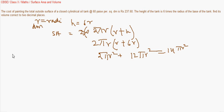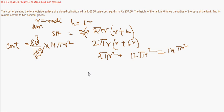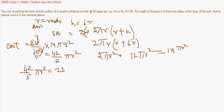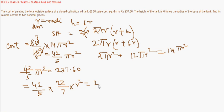The cost of painting is 60 paise, which is 60 by 100 rupees, times 14 pi r squared. Simplifying the numerical parts gives 42 by 5 pi r squared as the cost of painting. Since the total cost is also given as 237.60, we equate 42 by 5 pi r squared with 237.60.